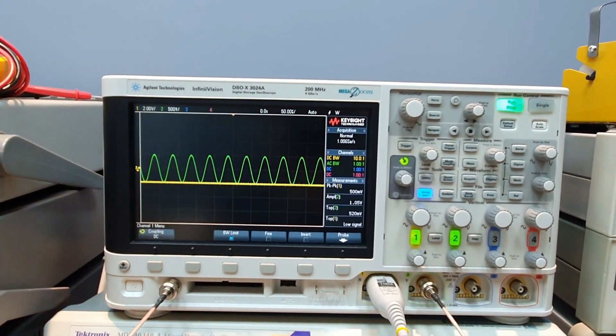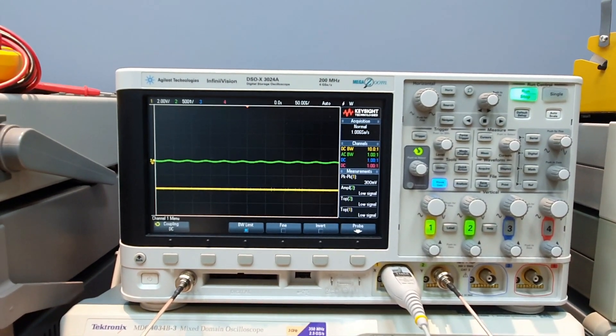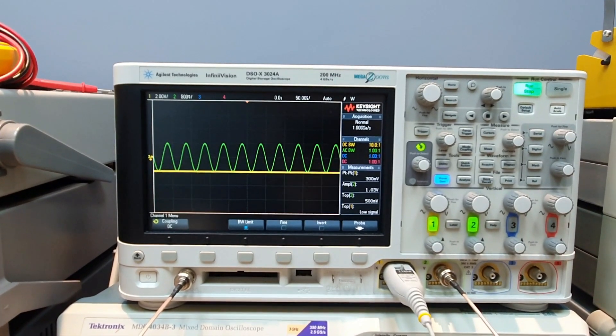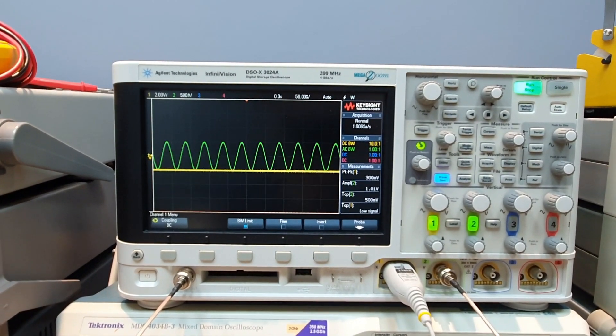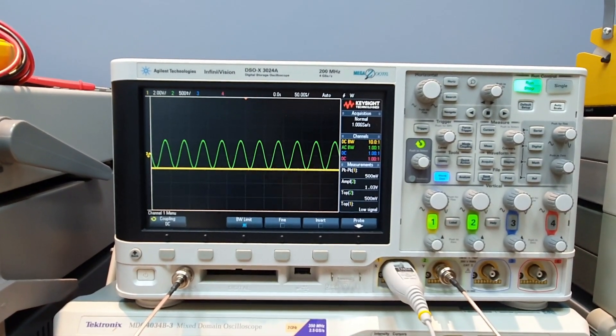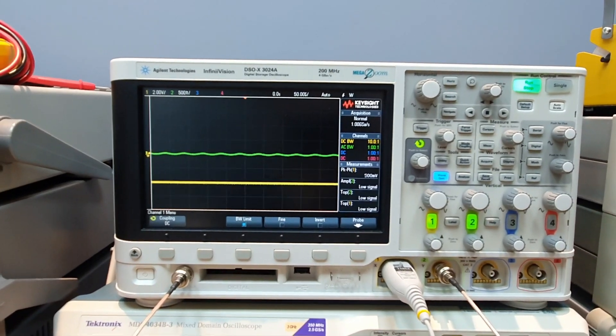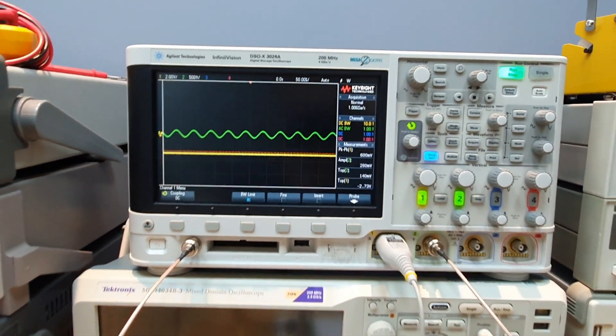The yellow trace is the DC control voltage and the green is the output of the amplifier and how can it control the gain of a transistor amplifier using a DC voltage. Let's see it.